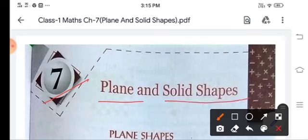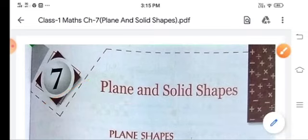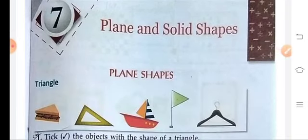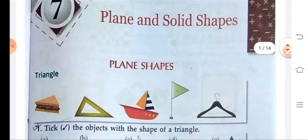Children, you must have seen different shapes in your home like square, rectangular, then triangle. You must have seen Ludo and the Carrom. So what is the shape of the Ludo and the Carrom? What is the shape of a flag or what is the shape of a hanger? They may be triangle, they may be square, they may be rectangle.